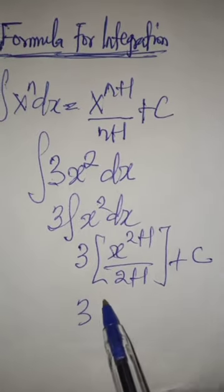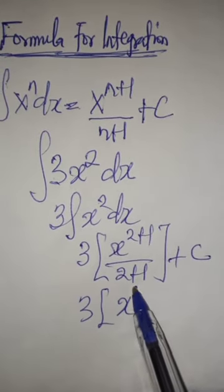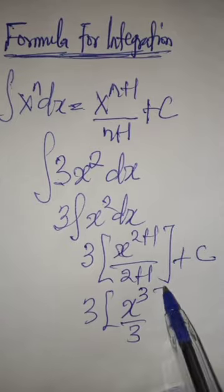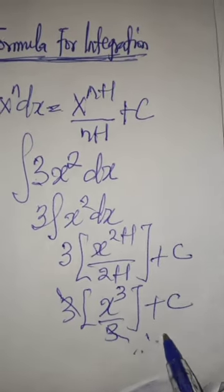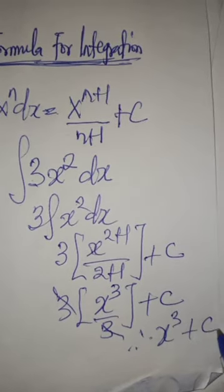So finally you have 3 into x to the power of 3 over 3 plus constant c, and this will cancel out with this. Therefore, x to the power of 3 plus c is the answer.